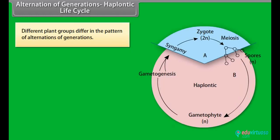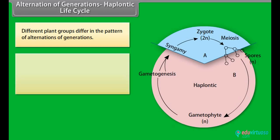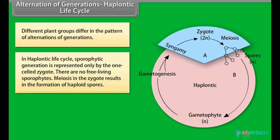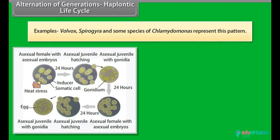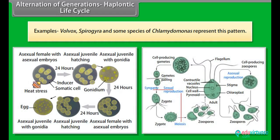Haplontic life cycle: Different plant groups differ in their pattern of alternation of generations. In a haplontic life cycle, the sporophytic generation is represented only by the one-celled zygote. There are no free-living sporophytes. Meiosis in the zygote results in the formation of haploid spores. The haploid spores divide mitotically and form the gametophyte. The dominant, photosynthetic phase in such plants is the free-living gametophyte. Examples: Volvox, Spirogyra, and some species of Chlamydomonas represent this pattern.